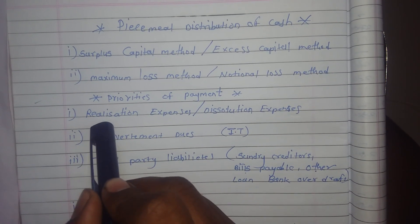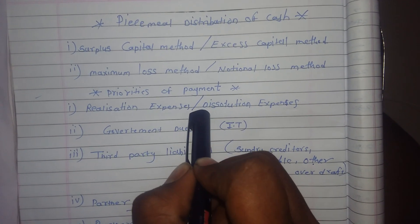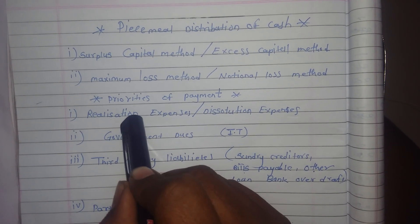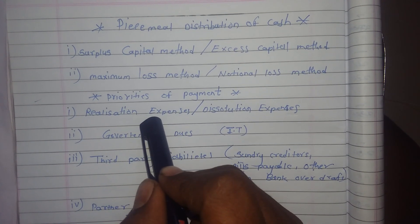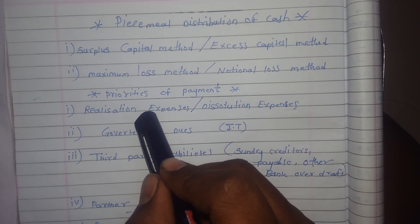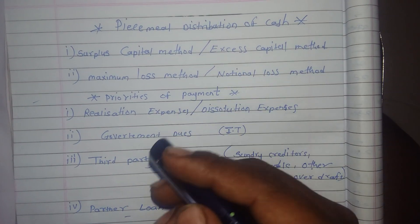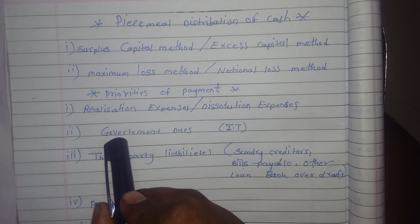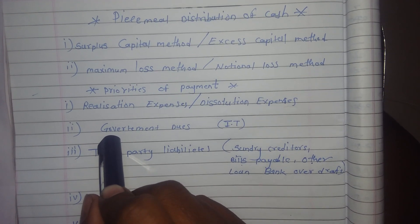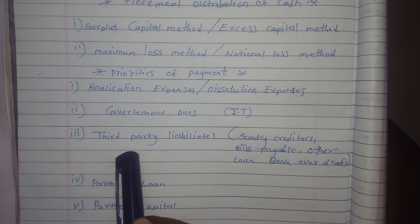First of all, realization expenses are paid - realization expenses or dissolution expenses. Realization expenses means we legally pay for firm closing. If the firm is closed, we need to follow some procedure and pay for legal or dissolution expenses. We also need to pay for government dues, and then we need to pay for income tax. Then we need to pay for third party liabilities.